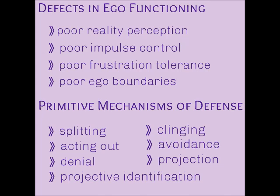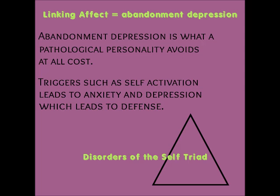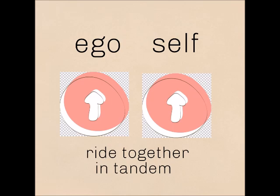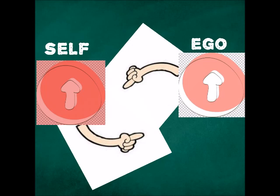So, what makes the adult personality disorder tick? For that I'll revisit Masterson's disorders of the self-triad. When triggered by either self-activation, separation stress, or failures in empathy, this leads to defense to avoid feelings of abandonment depression. Where self-activation is when the self is whole and autonomous and is able to take on the vital functions of the self. Recall that the self and the ego ride in tandem — they develop and function as parallel partners.